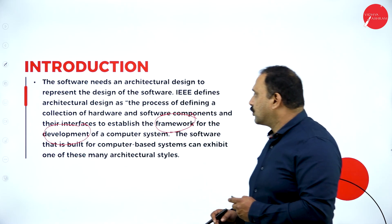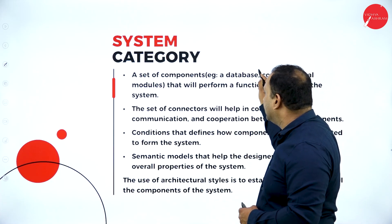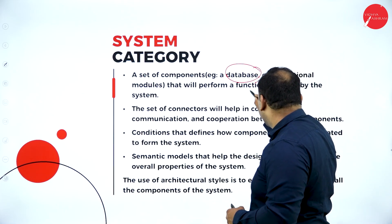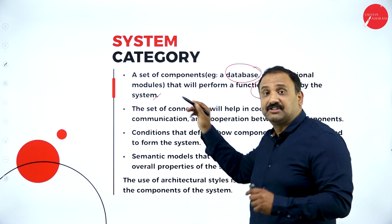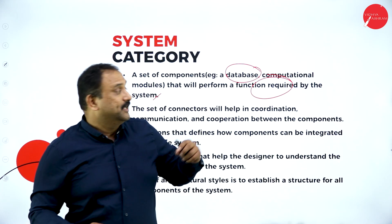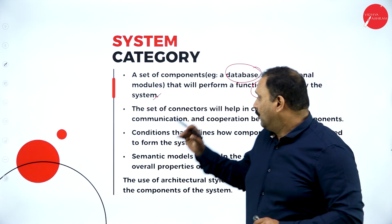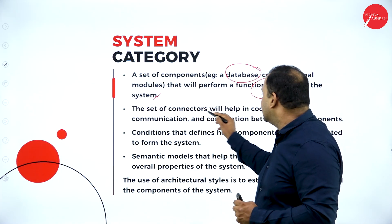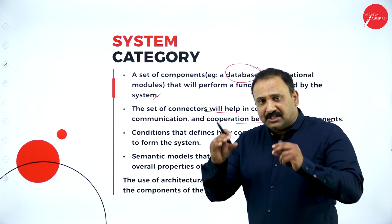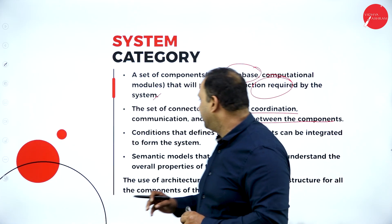We are also going to understand the system category. System category is a component that consists of database and computational models that will perform functions required by the system — whatever the system is requiring and asking you to do. The set of connectors will help in coordination, communication, and cooperation between the components. There needs to be an intermediate that will talk, communicate, and put the system in place.